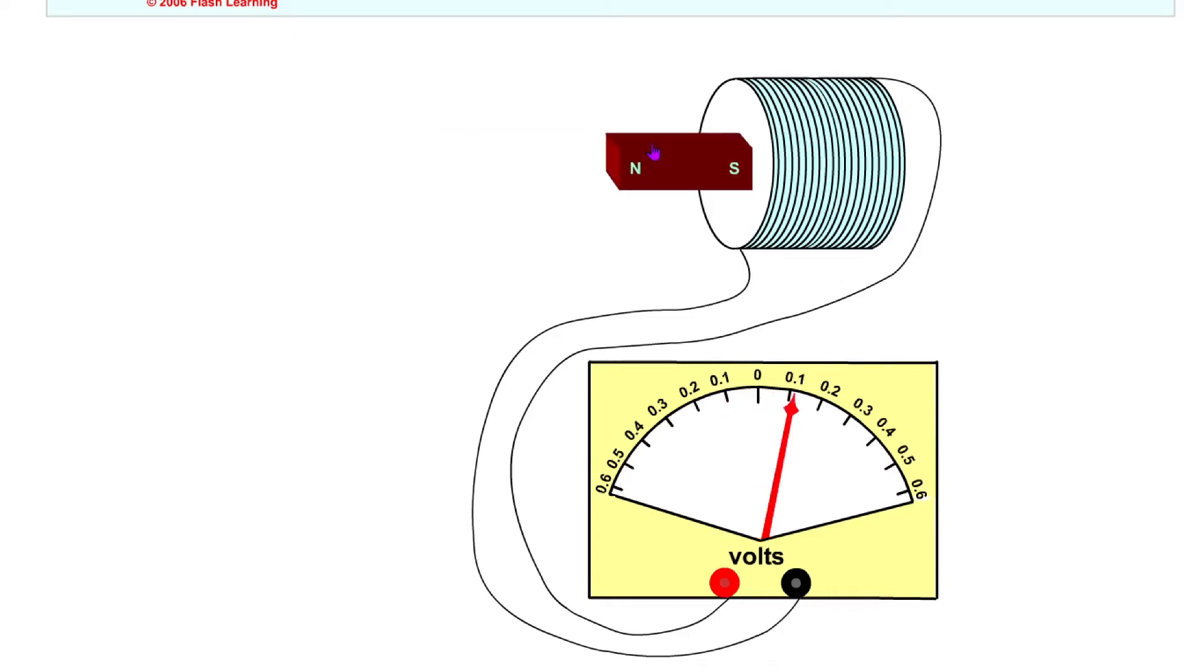And you should be able to see the greater the speed, the bigger the EMF or voltage on the voltmeter. If we now use a bigger and stronger magnet and do the same again, you'll notice we get larger values on the voltmeter, so we get a larger EMF produced.